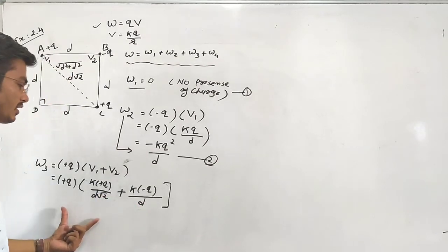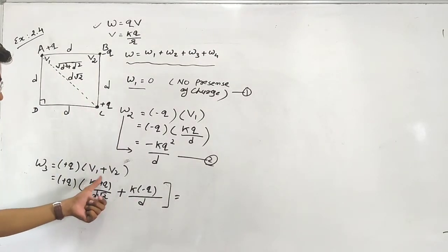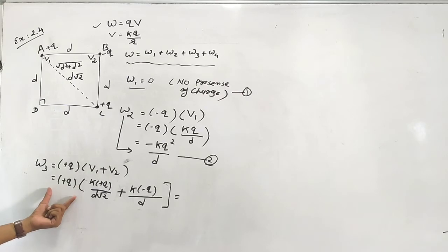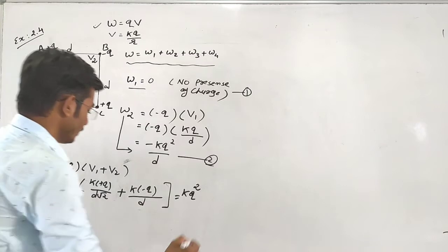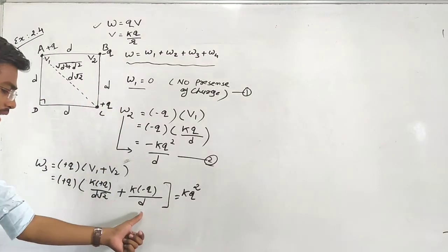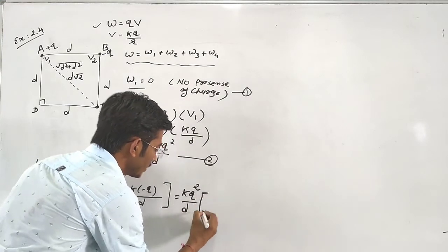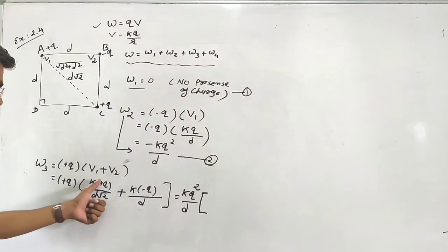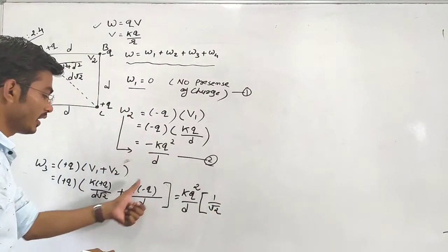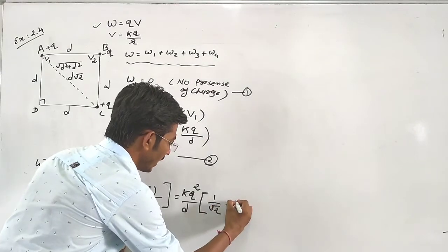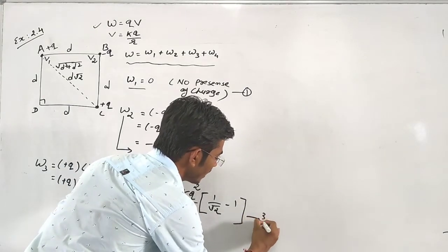We can take KQ as a common factor, and D is also common. So inside the bracket, what remains is only KQ divided by D. Taking KQ squared as common, we factor out to get W3. This is our equation number three.